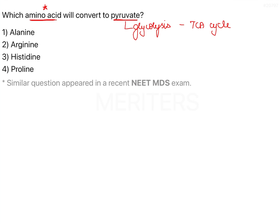The given options are alanine, arginine, histidine, and proline. Alanine is a simple aliphatic amino acid, whereas arginine is a basic amino acid. Histidine is also a basic amino acid, and proline is an imino acid.